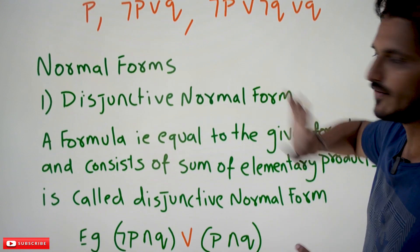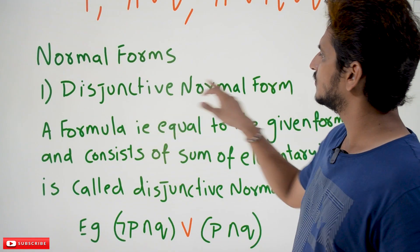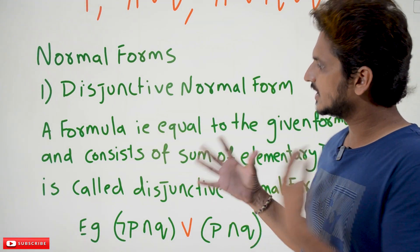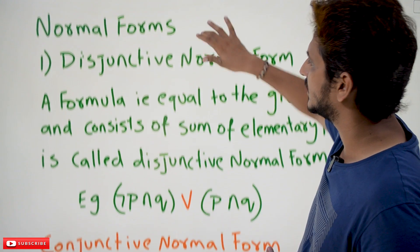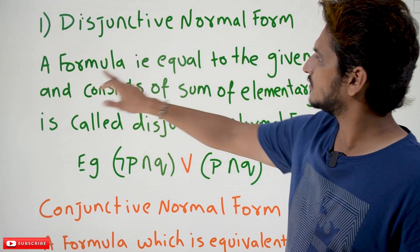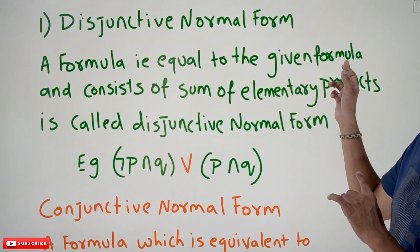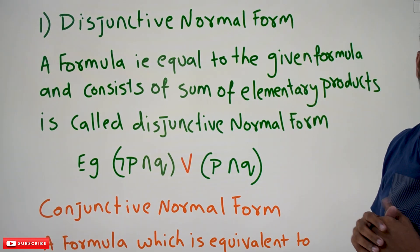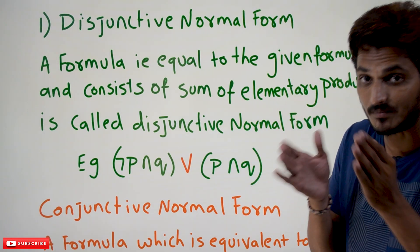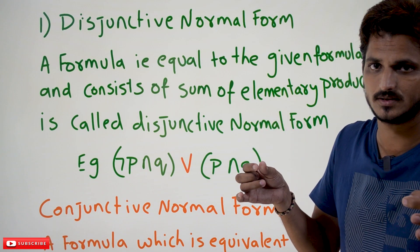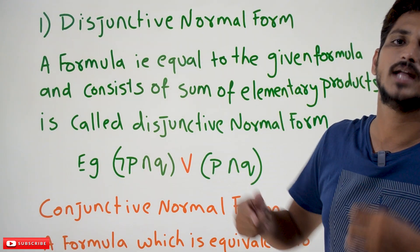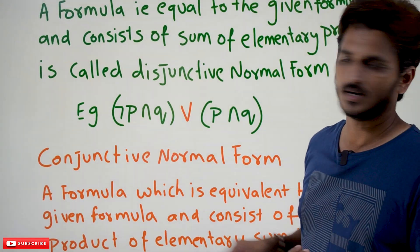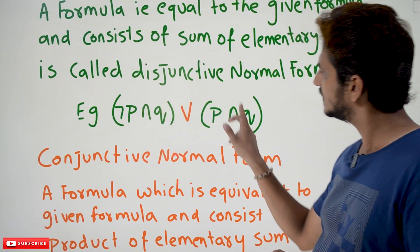Now coming to the normal forms — we have two types of normal forms. One is disjunctive normal form and the second one is conjunctive normal form. A formula that is equal to the given formula and consists of a sum of elementary products is called disjunctive normal form. Disjunctive means disjunction, and disjunction means sum — so it is a sum of elementary products.